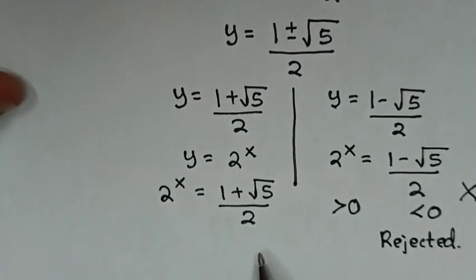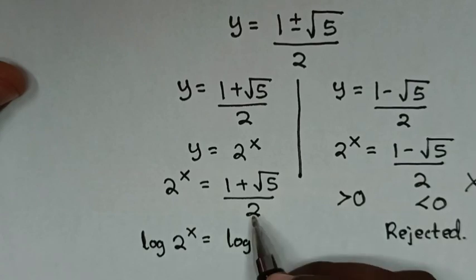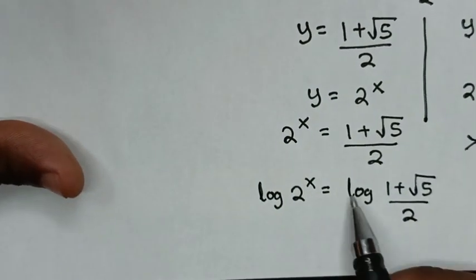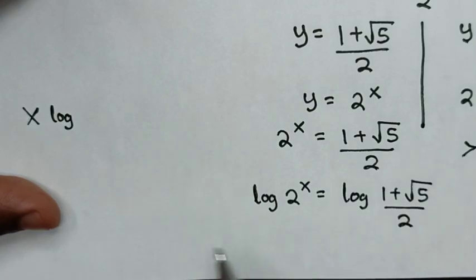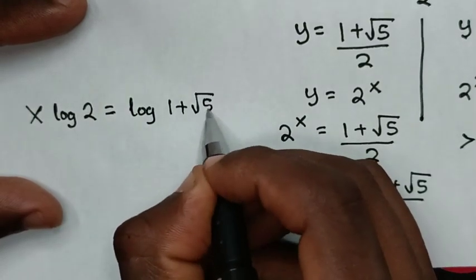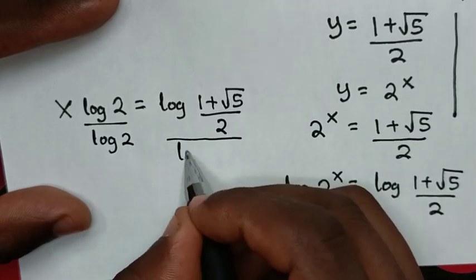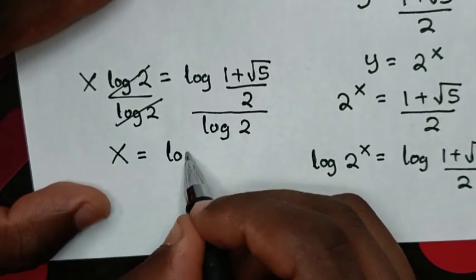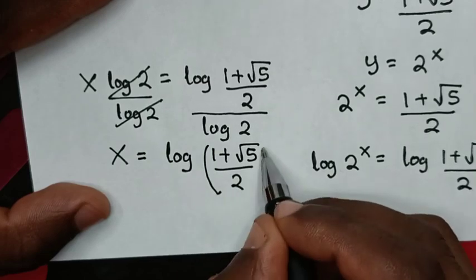To continue solving from the remaining solution, we apply log to both sides. So log of 2 power x is equal to log of 1 plus square root of 5 over 2. The power x moves down, giving x times log 2 equals log of 1 plus square root of 5 over 2. Dividing both sides by log 2, x is equal to log base 2 of the quantity 1 plus square root of 5 over 2.